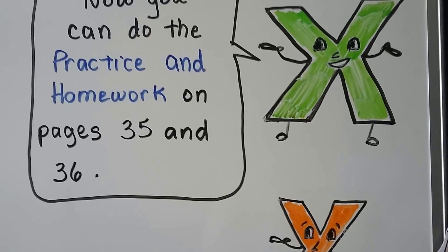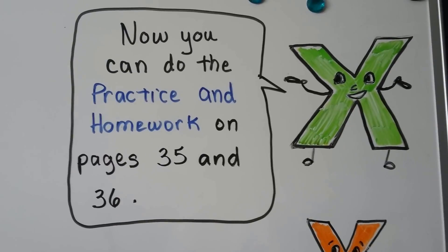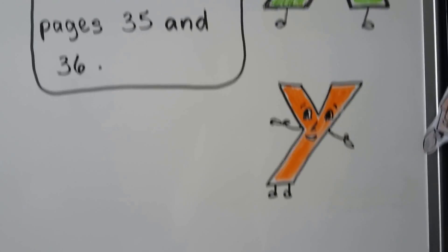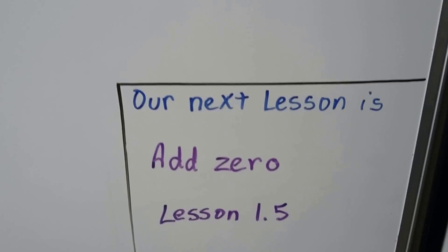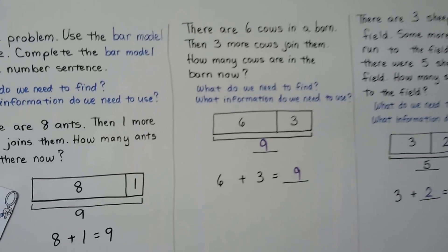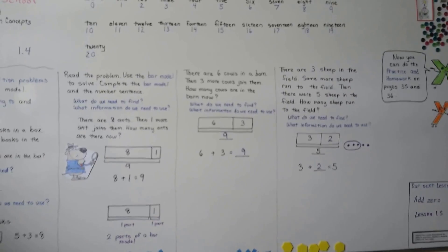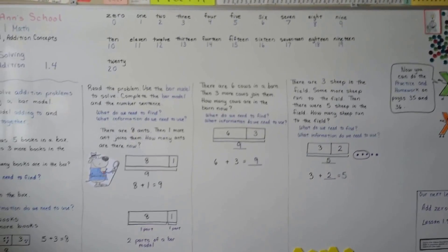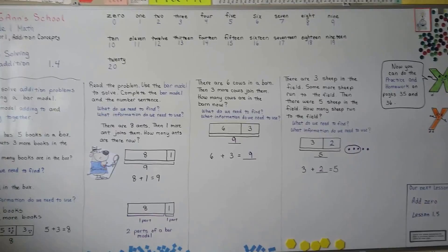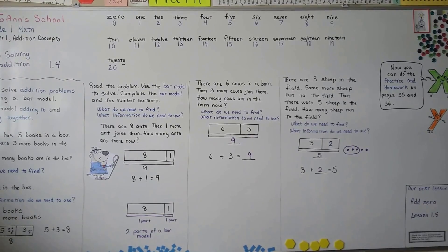Now you can do the practice and homework on pages 35 and 36. Our next lesson is going to be add zero — that's lesson 1.5. I hope this was helpful and I hope you do okay on your practice and homework. Practice your addition facts so that you can be good at them. I'll see you next time. Bye.